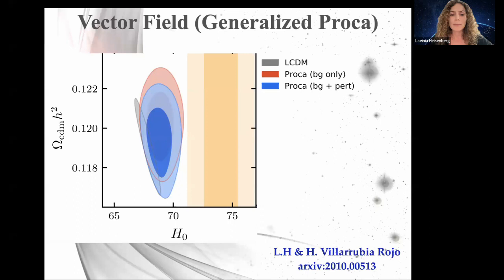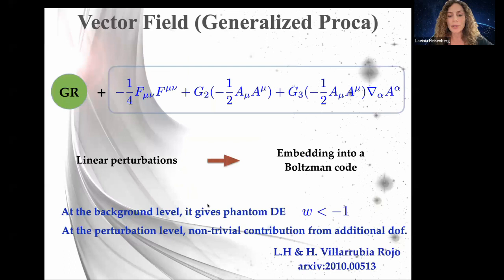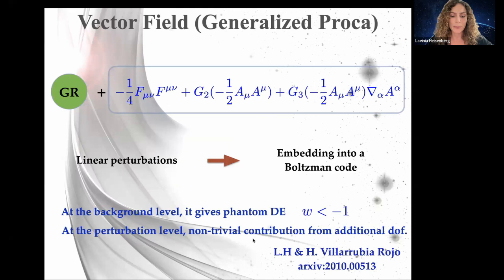At the background level, the reason this helps with the H0 tension is that the equation of state is smaller than −1. At the perturbation level there are non-trivial contributions from additional vector degrees of freedom.